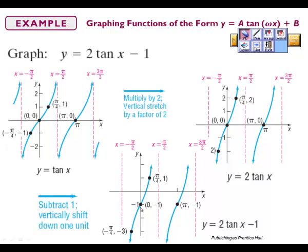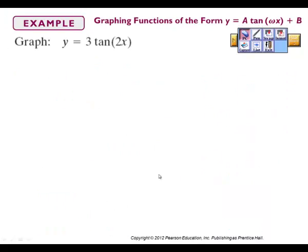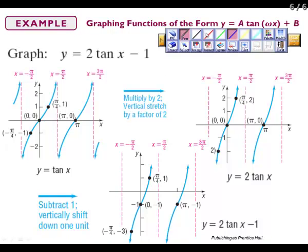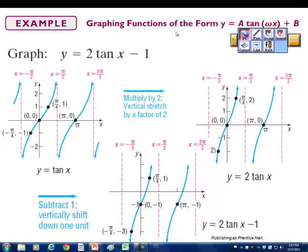They moved the graph down. We kept the asymptotes the same and adjusted the curve. The zero point became negative 1, positive one became positive 1 shifted, and the bottom became negative 3. It helps to work through it this way because it makes it easier to graph.